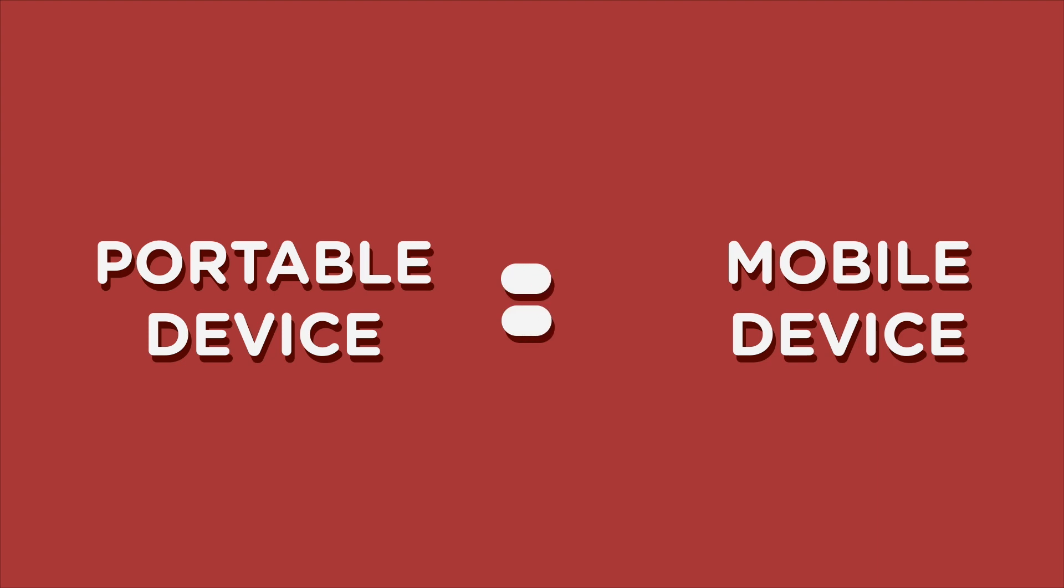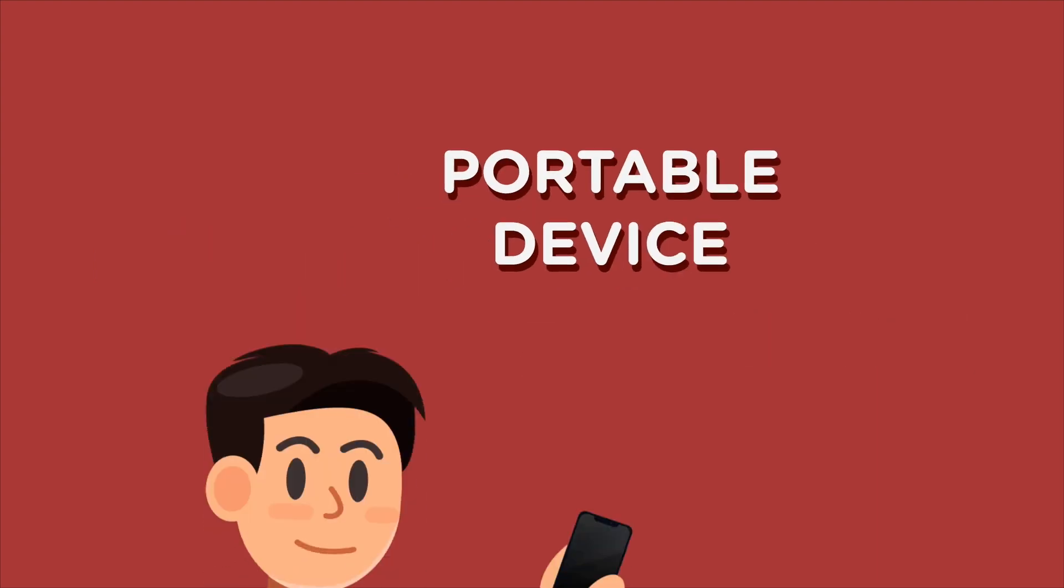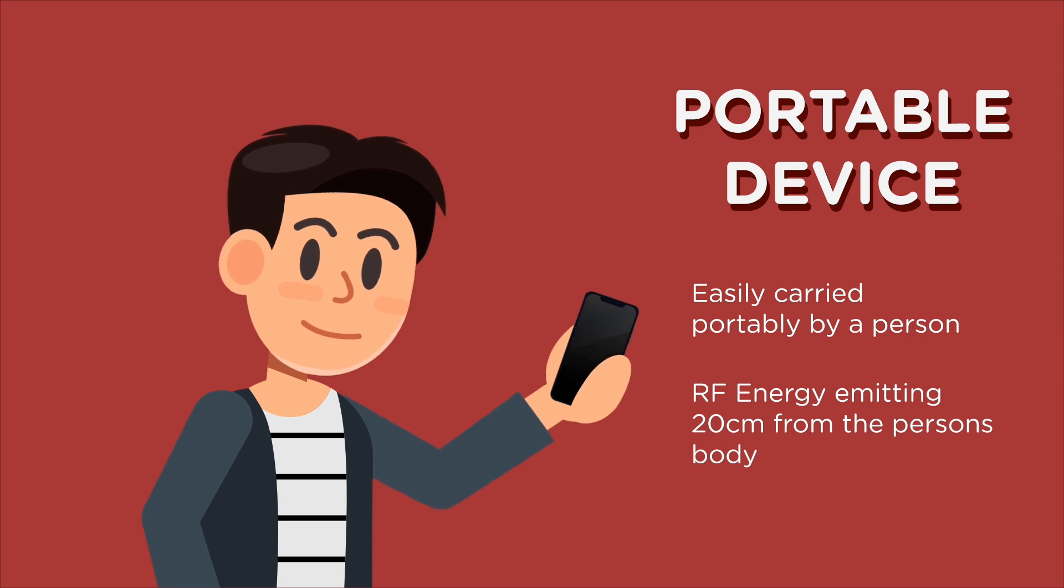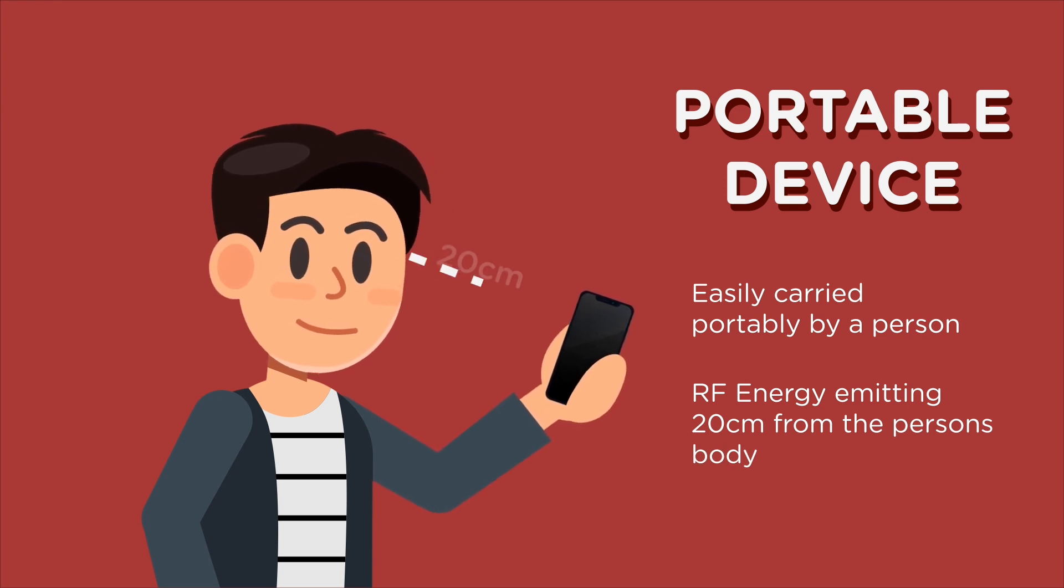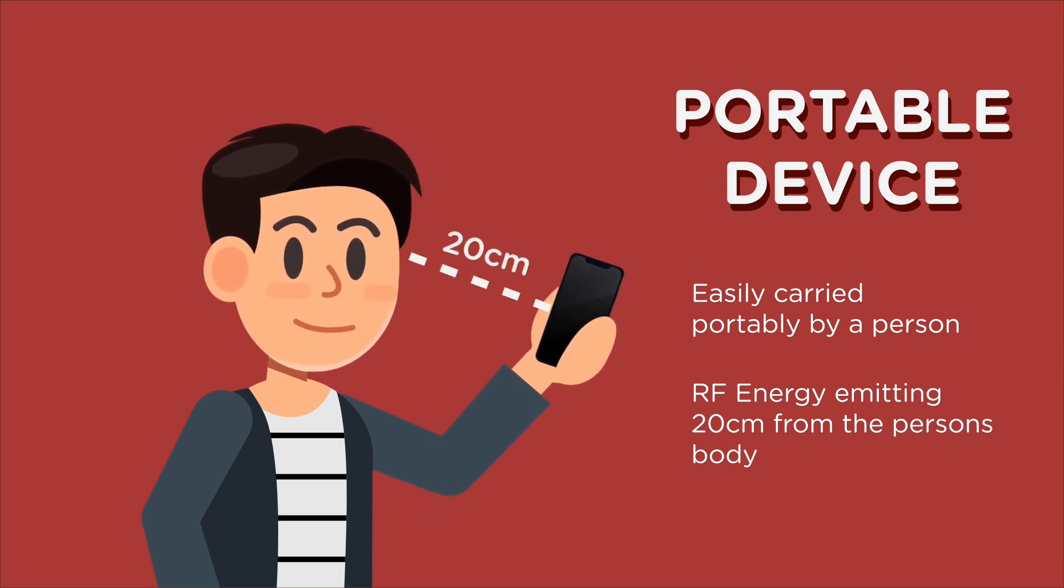The last thing is what the government distinguishes between a portable device and a mobile device. To the everyday person, they mean the same thing. But for manufacturers, certification bodies, and test labs, they're completely different. A portable product means something that's reasonably foreseeable to be used within 20 centimeters of a person's body, head, or hand.